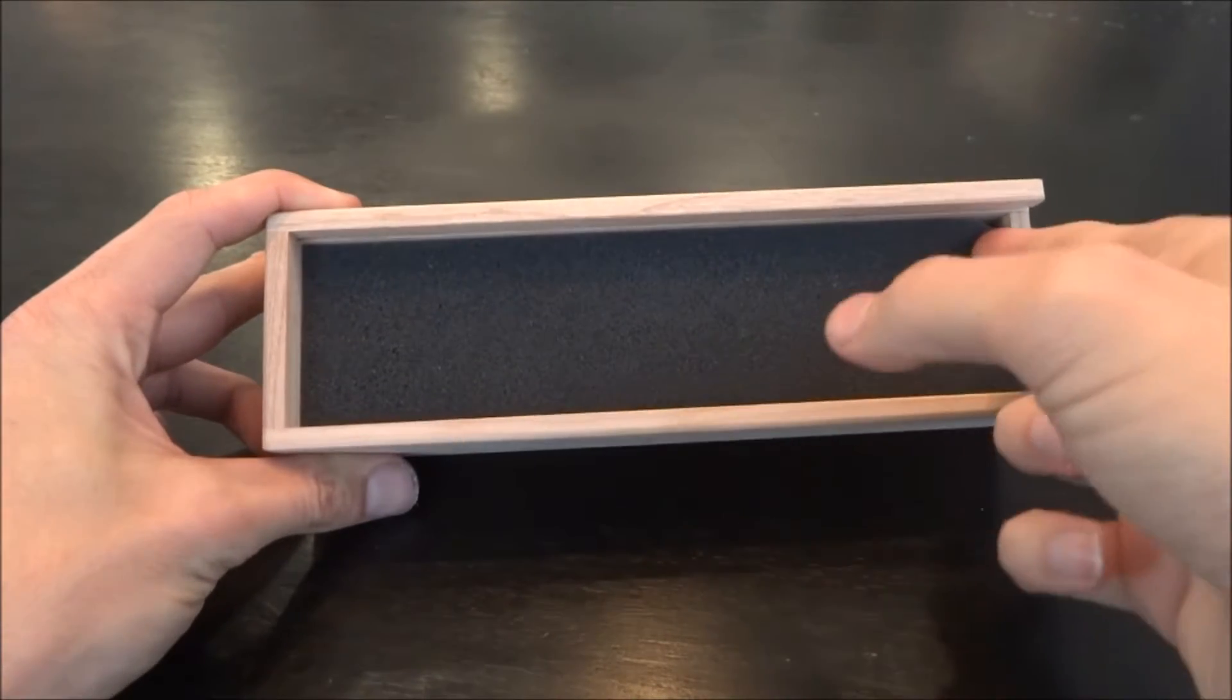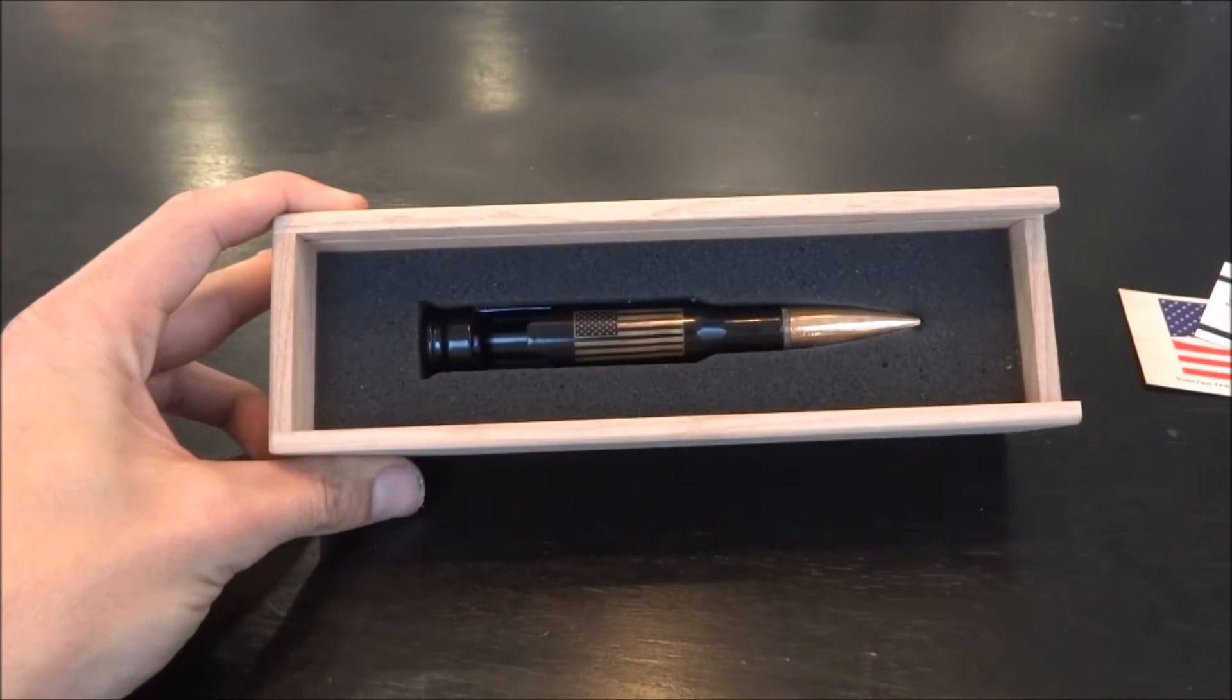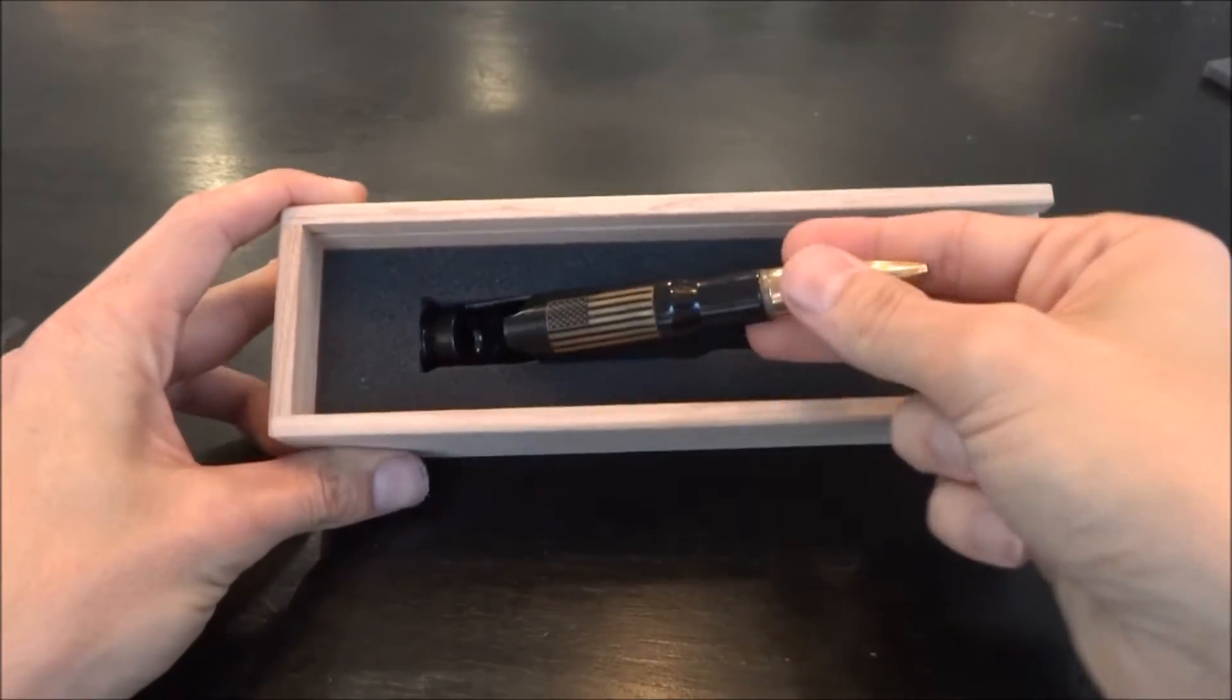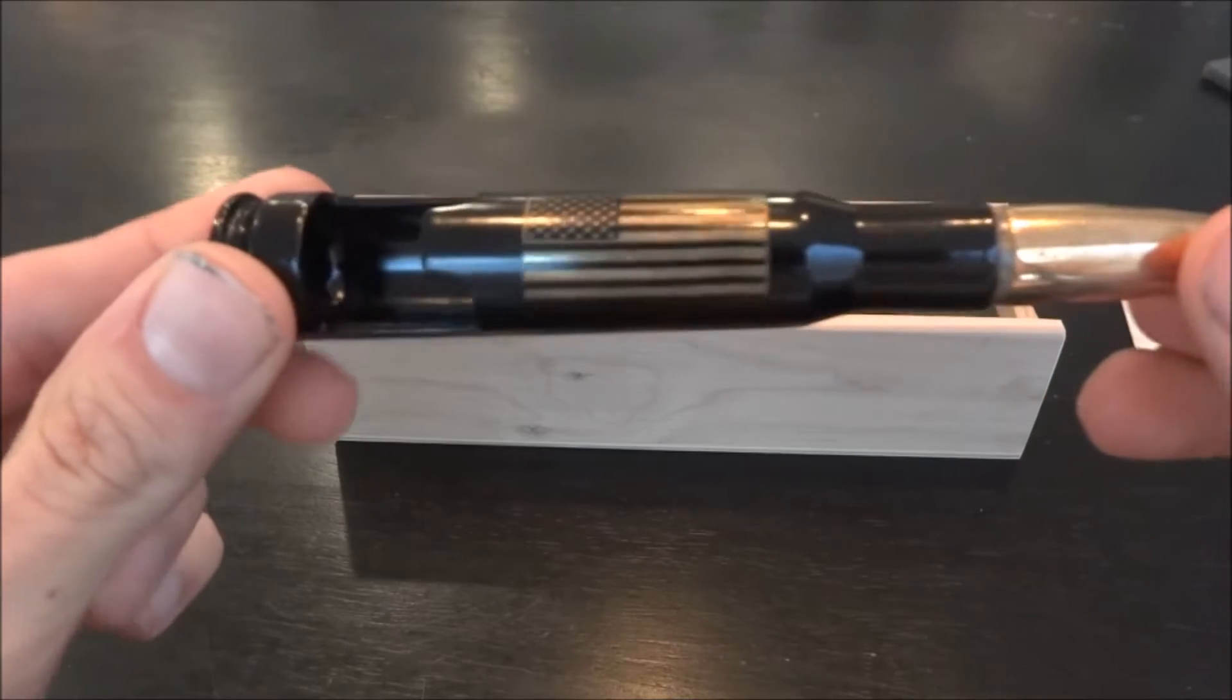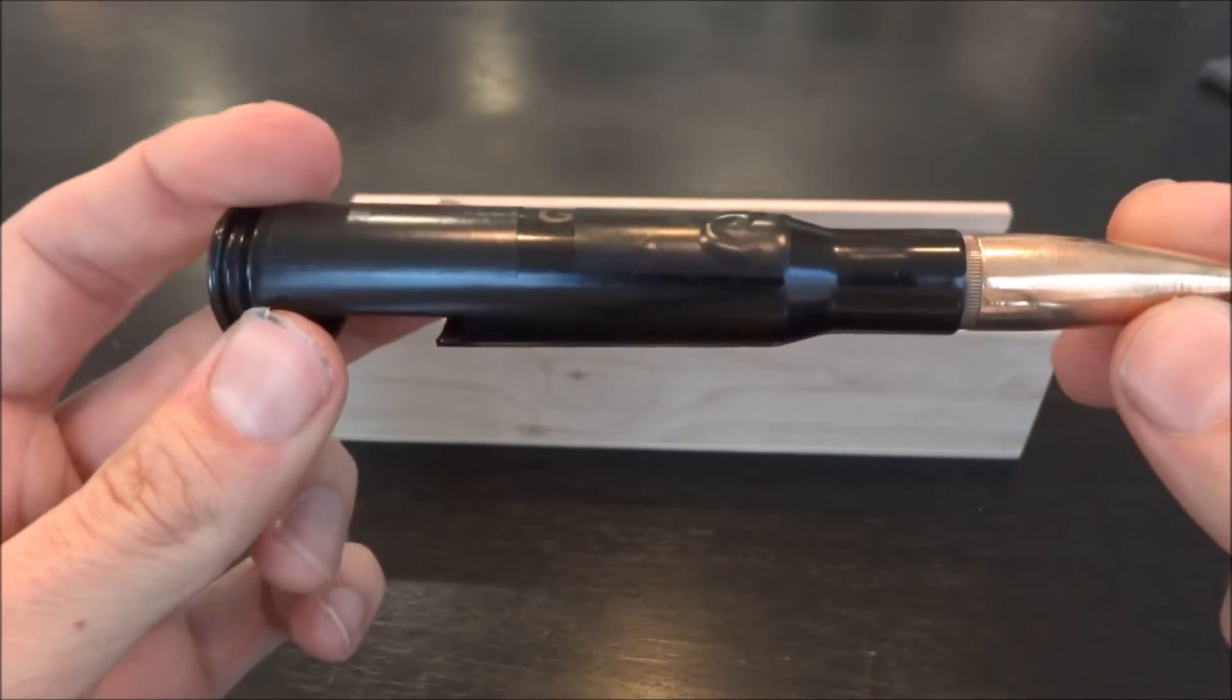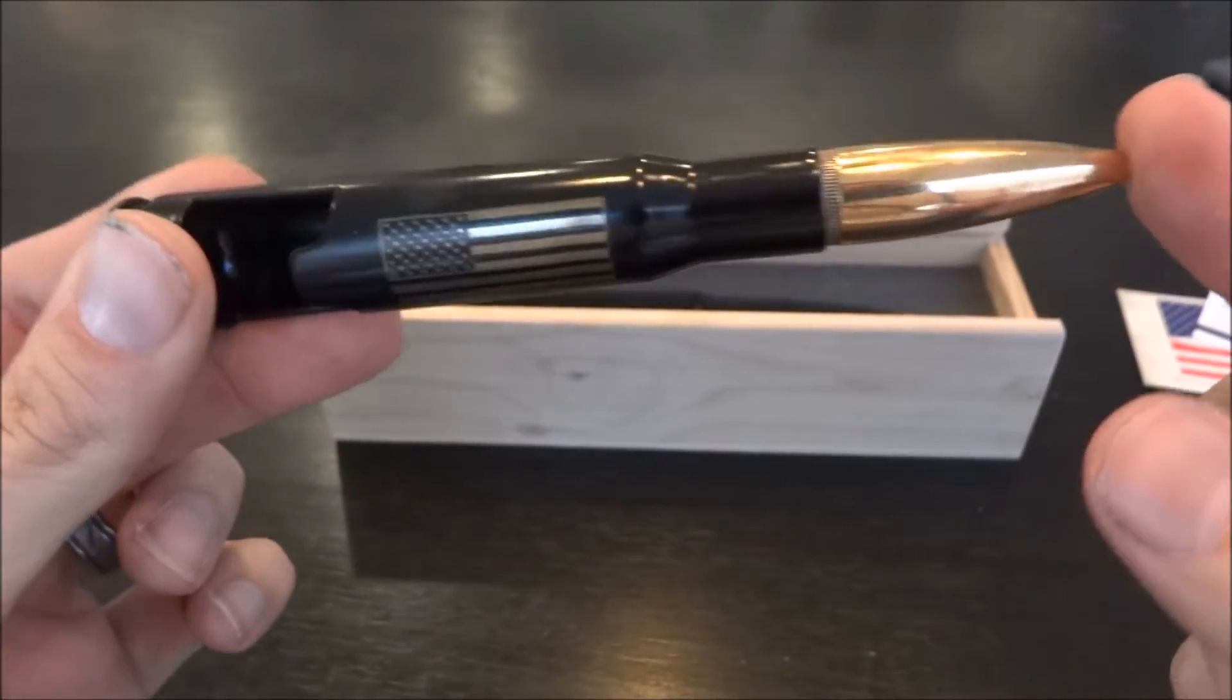Alright guys, here we go. I'm going to remove the little foam here. Check that out. Let's see what we got. I'm going to take it out here. As you can see, it's a large projectile. I'll get to the specs here in just a little bit. As you can see, the cartridge is painted black, and it actually does have a projectile in there.